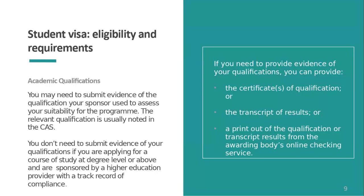In some cases you may need to submit evidence of your qualifications. However, if you are studying at a higher education provider with a track record of compliance and your programme is at degree level or above, you don't need to submit that evidence — another change introduced with the Student Route. If you do need to submit it, you can use the degree certificate, a transcript confirming you have been awarded your qualification, or a printout from the awarding body's online checking service — for example, the International Baccalaureate offers this service.